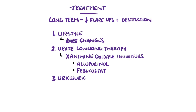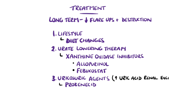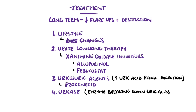If these are not tolerated, uricosuric agents like probenecid can be used to increase renal excretion. Uricase is an enzyme that breaks down uric acid that no longer exists in humans, but a recombinant form called pegloticase is an option in specific cases.